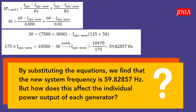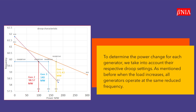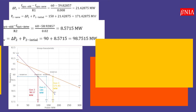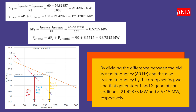But how does this affect the individual power output of each generator? To determine the power change for each generator, we take into account their respective droop settings. As mentioned, when the load increases, all generators operate at the same reduced frequency. By dividing the difference between the old system frequency of 60 Hz and the new system frequency by the droop setting, we find that generators 1 and 2 generate an additional 21.42875 MW and 8.5715 MW, respectively.